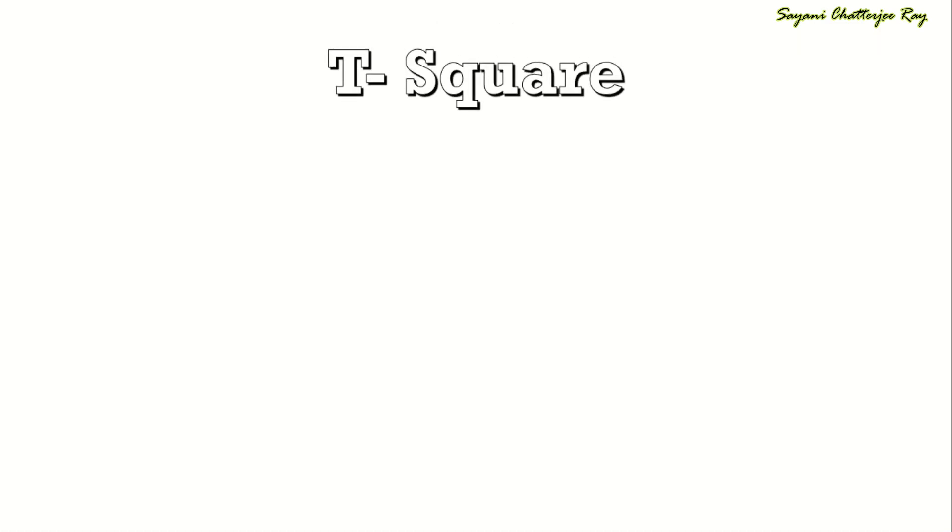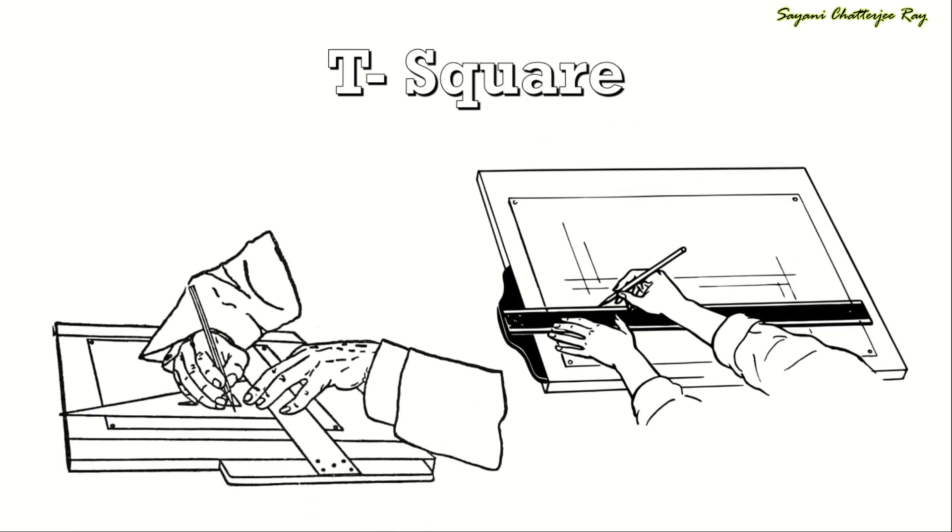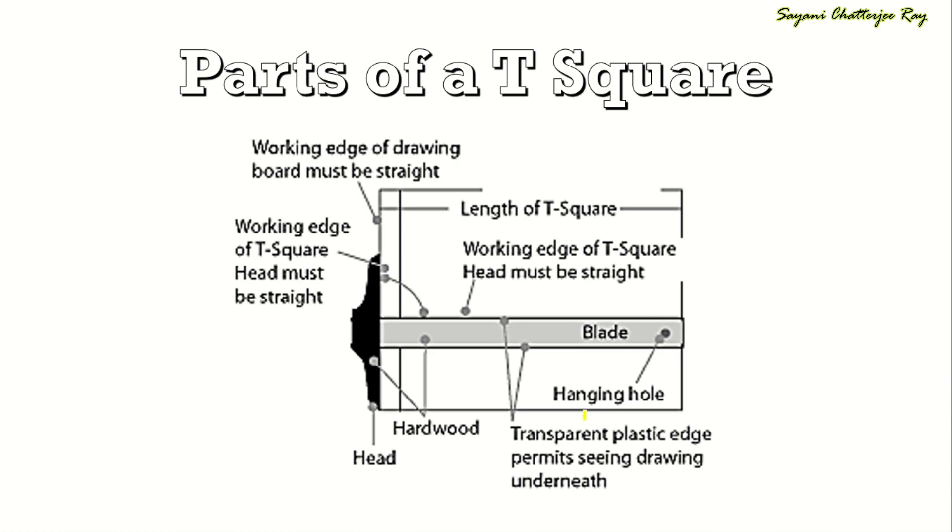The next very important instrument in engineering drawing is T-square. T-square is generally made of hard quality wood, but nowadays is available in celluloid or plastic with engraved scale. T-square is used for drawing horizontal and parallel lines. The parts of a T-square include the head of the T-square, the blade of the T-square, and a hanging hole. The working edge of the board and the working edge of the T-square must be straight. The length of the blade is the total length of the T-square.